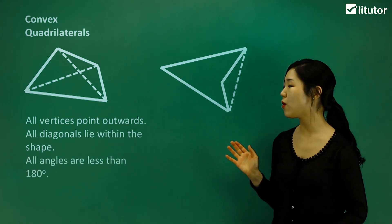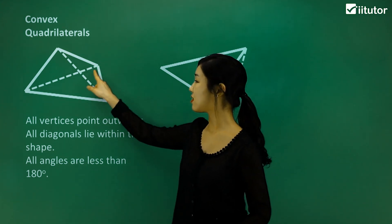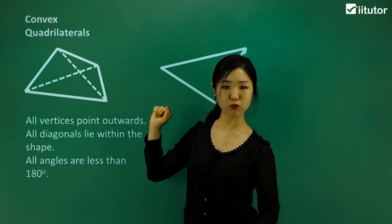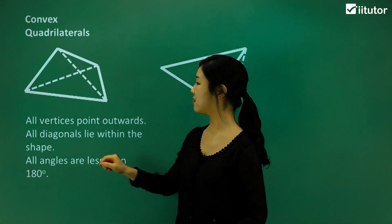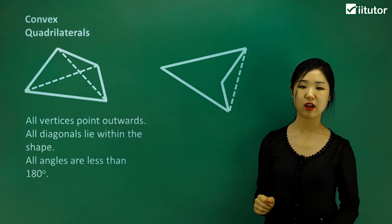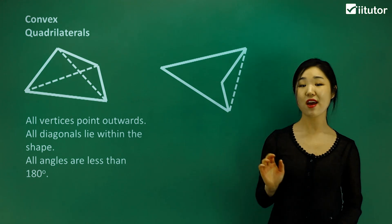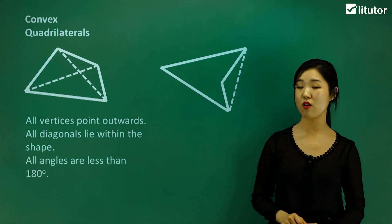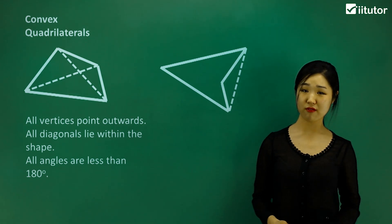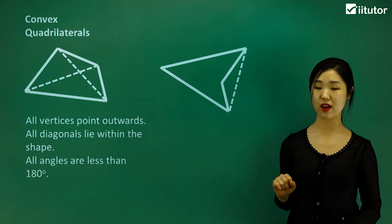Another key property is that all angles must be less than 180 degrees. You can see that these angles here probably look obtuse, which is still less than 180 degrees, and these look acute — so definitely less than 180. If all angles are less than 180 degrees, that's also a key aspect of a convex quadrilateral. To satisfy being a convex quadrilateral, it has to satisfy all three of these key properties.